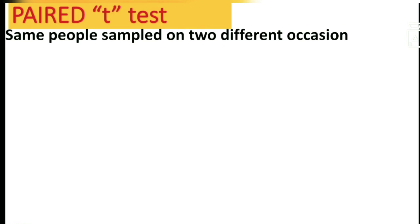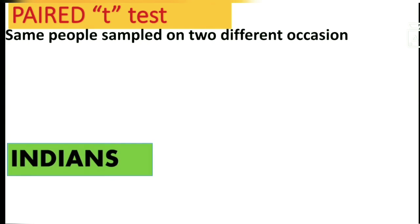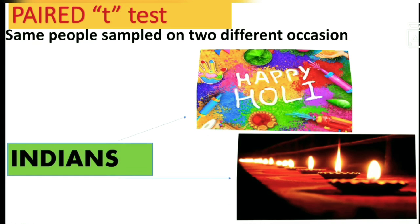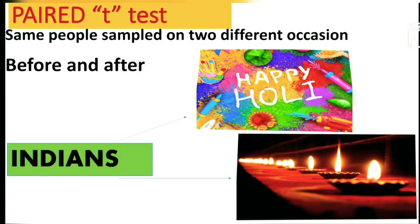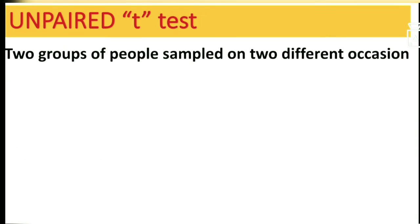In paired t-test, the same people are sampled on two different occasions. For example, one group — Indians — on two occasions: Indians during Holi and Indians during Diwali. Before summer they celebrate Holi, and after summer they celebrate Diwali. So it is 'before and after.' The same people are compared on two occasions. In paired t-test it will always be one group compared on two different occasions.